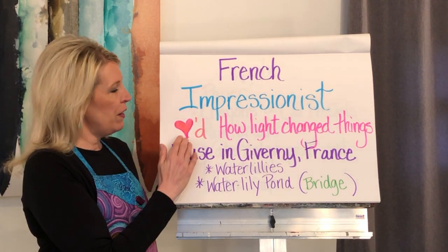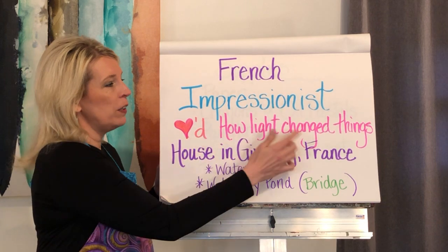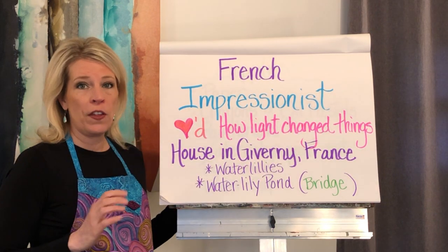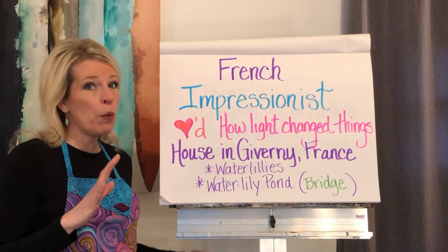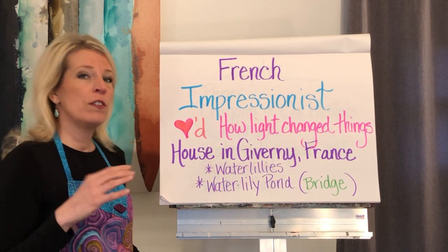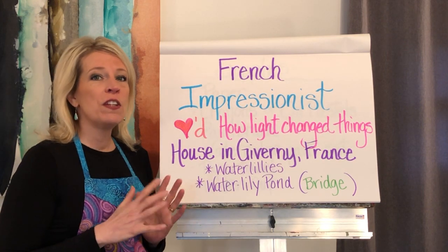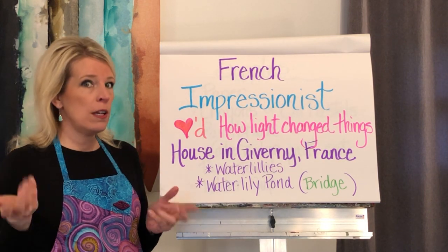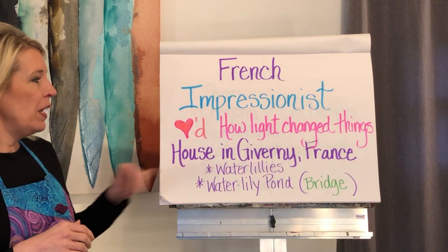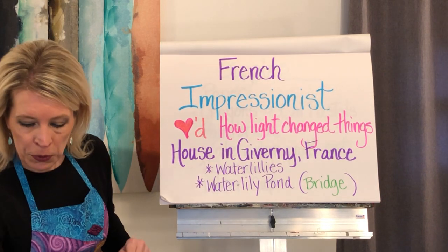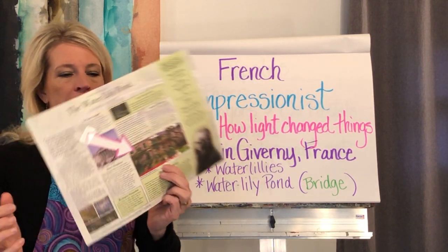Claude Monet was very interested in and loved how light changed things — time of day, how things look different in the morning than at night, different seasons of the year. You can see how that could be very interesting. He had a beautiful house in Giverny, France.